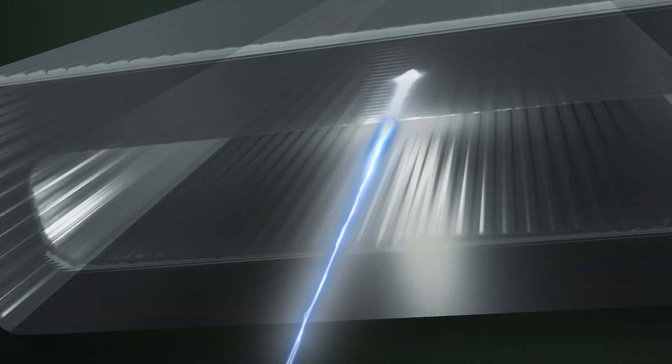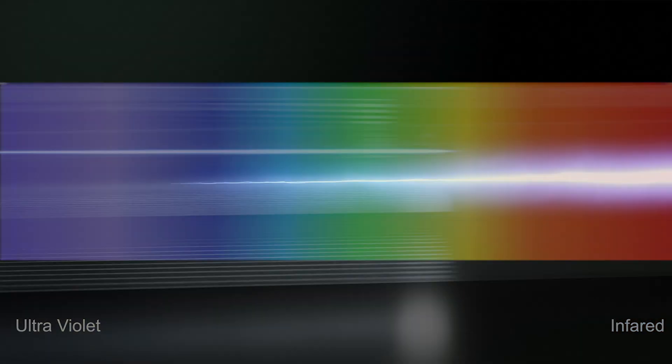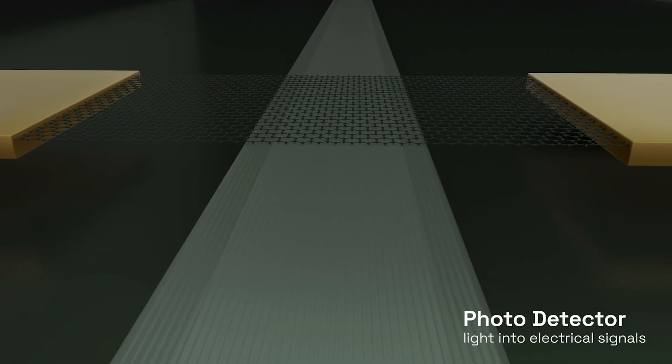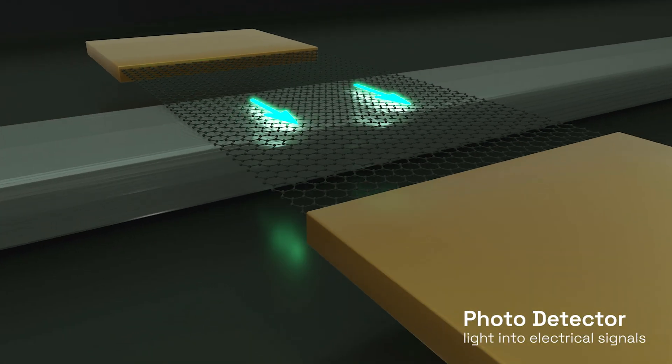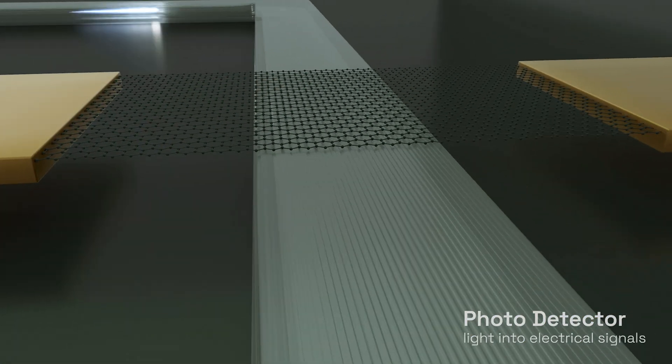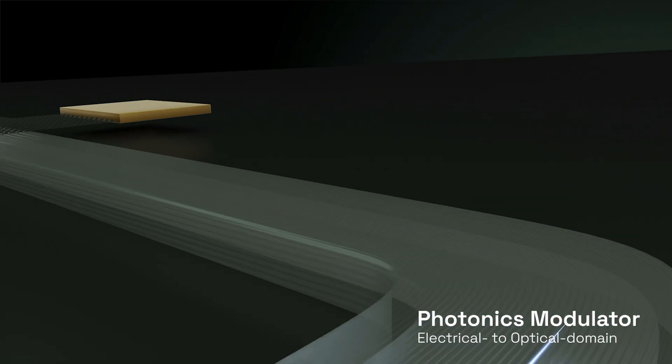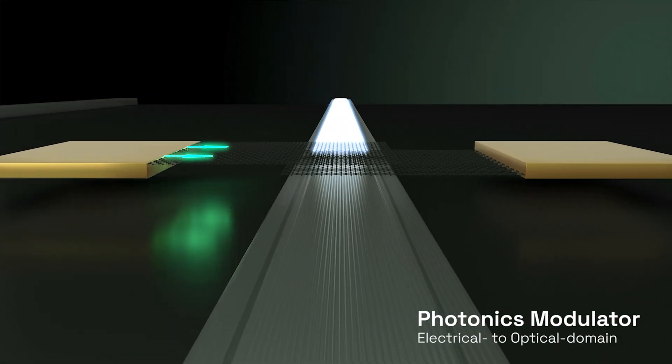Graphene absorbs light across a broad spectrum of wavelengths, making it ideal for photodetectors that convert light into electrical signals. And because electrons move through it so quickly, it's perfect for high-speed modulation that converts electrical signals into optical signals.